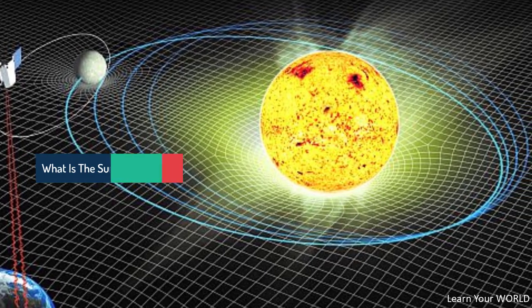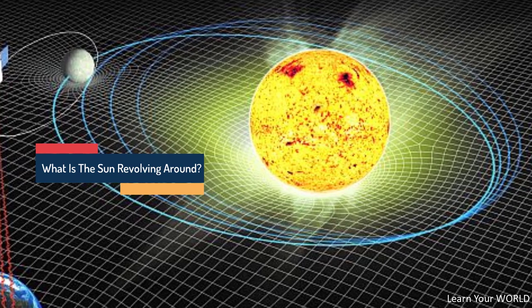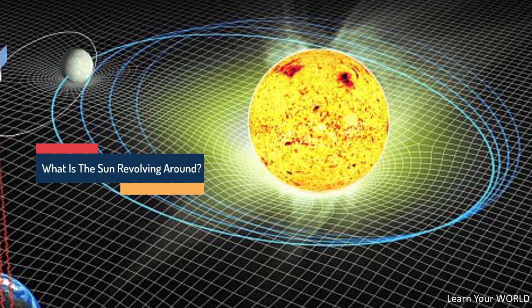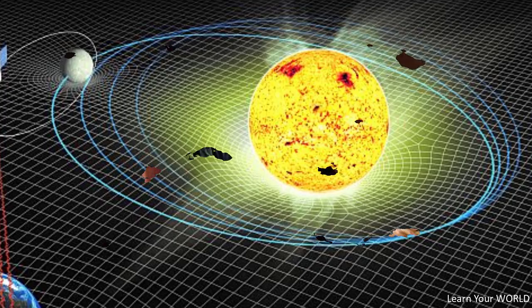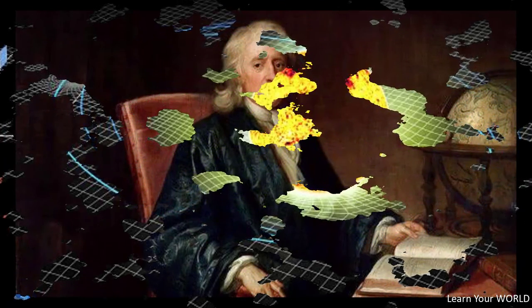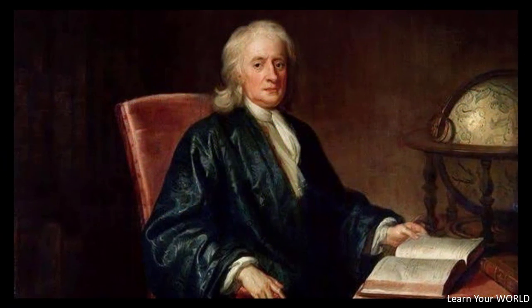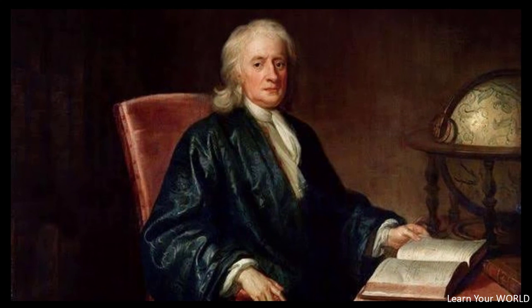What is the sun revolving around? Around a black hole in the center of the galaxy, like about a hundred billion stars in the Milky Way galaxy. Black holes are so massive that they create enormous bends in the space-time fabric.